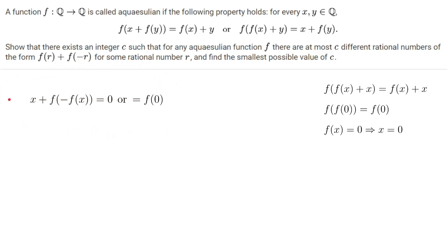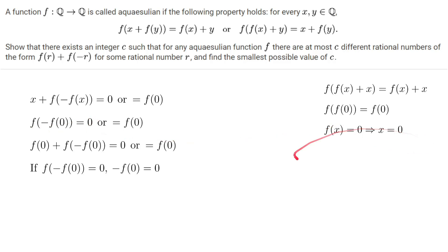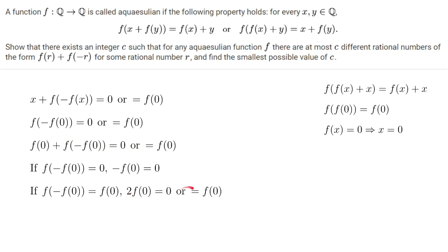It looks like we can prove f(0) = 0 from this, so let's try. If we substitute x = 0, we get f(-f(0)) = 0 or f(0). If we substitute x = f(0), we get f(0) + f(-f(0)) = 0 or f(0). But since f(f(0)) = f(0), we simplify. If f(-f(0)) = 0, then because of our earlier result, -f(0) = 0. If f(-f(0)) = f(0), then we get 2f(0) = 0 or equals f(0). So either way, f(0) = 0.